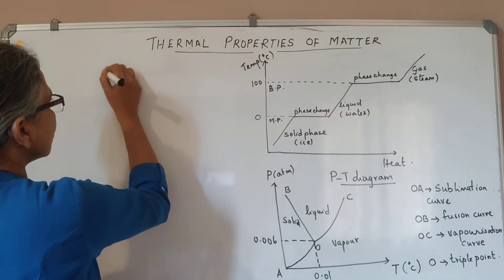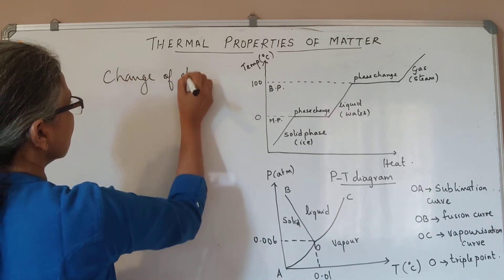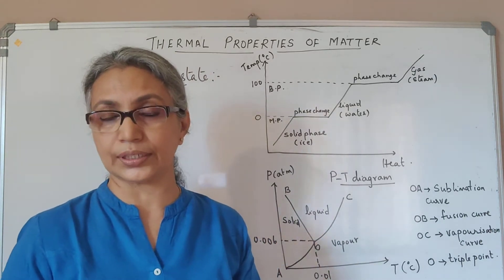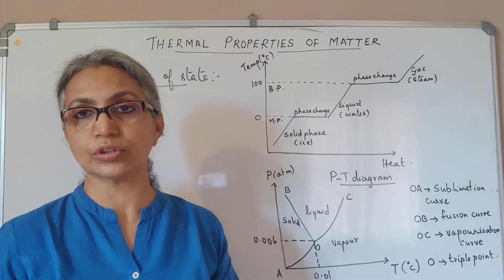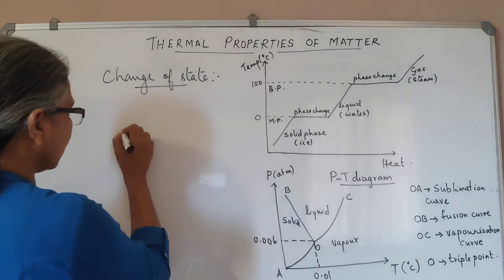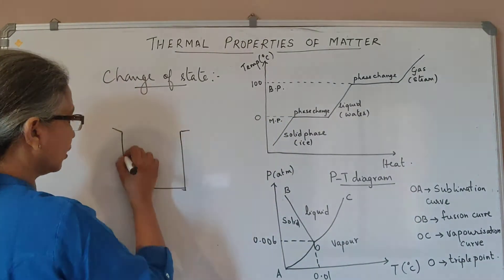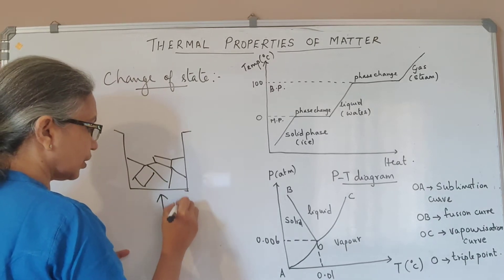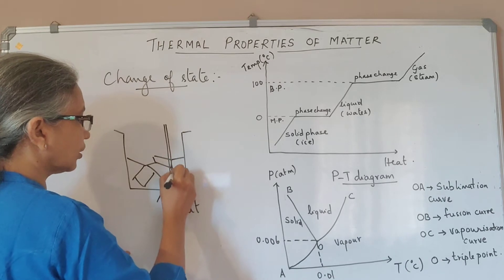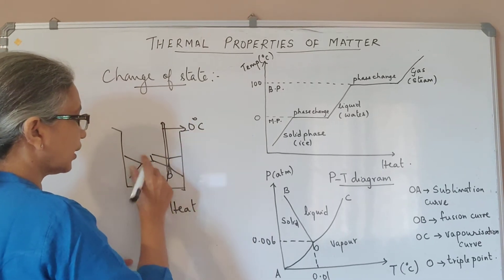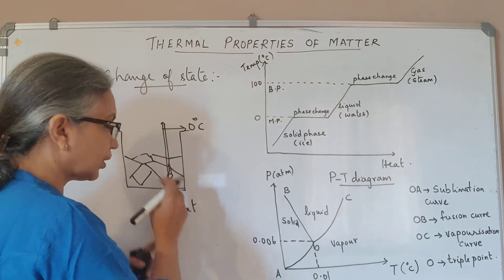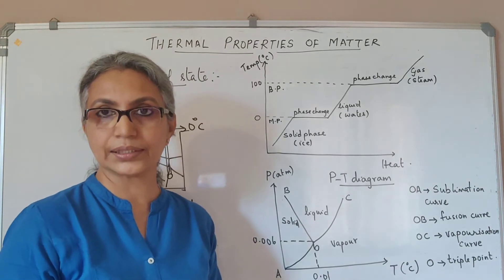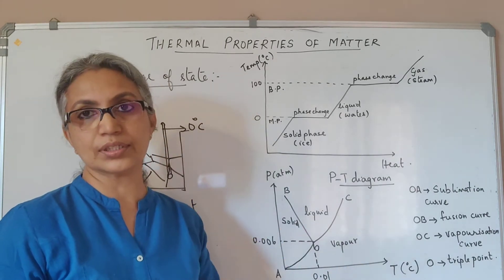The next topic is the change of state. All matter can exist in three forms: solid, liquid, and gaseous state. A transition from one state to another is called the change of state. If you take a container with ice cubes, insert a thermometer, and supply heat, the thermometer shows zero degrees — the solid ice absorbs heat and converts to the liquid state. Changing from solid to liquid is called melting; the reverse, from liquid to solid, is called fusion.